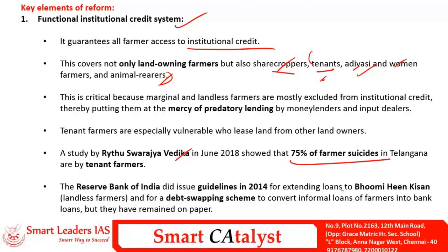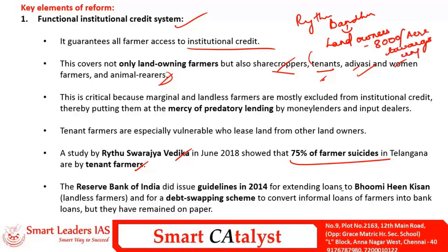A study by the NGO Right to Swaraj Vedika indicates that more than 75% of farmers who died in Telangana were from the tenant farmer community. Crop insurance schemes provided by state governments are applicable only to landowners — sharecroppers and tenant croppers do not enjoy insurance security. Even in the recently relaunched Rythu Bandhu scheme of Telangana, the focus is mainly on landowners, who are provided ₹8,000 per acre towards input costs, whereas tenant farmers receive no support.